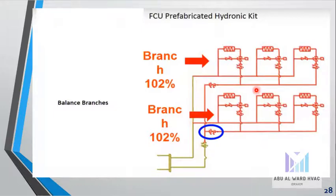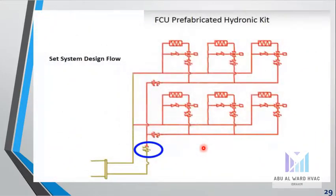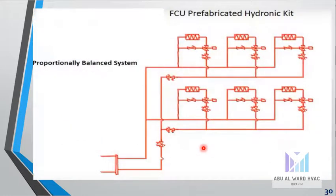We will set the main valve of the system here to balance the flow and set the system design flow. Then we can get our system as a proportionally balanced system. This is R_ST9. We will get it and finally get R_ST4 = 1.